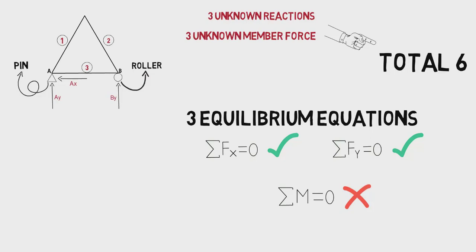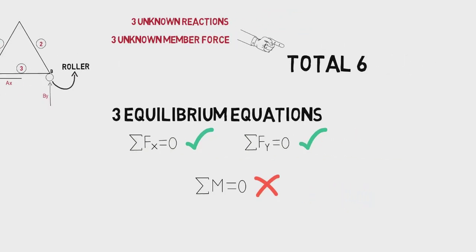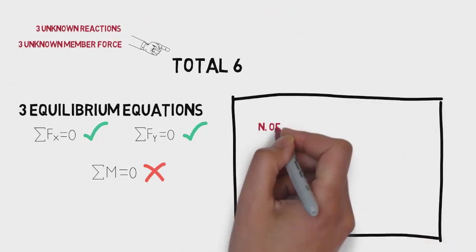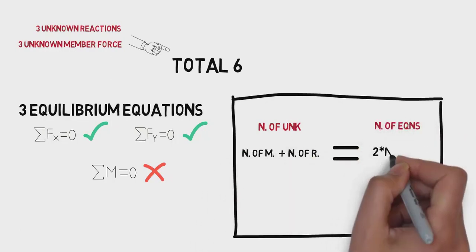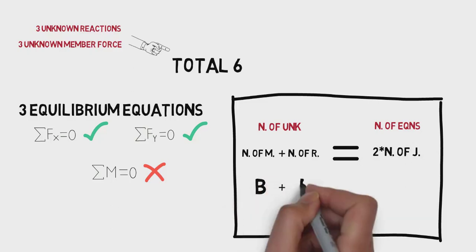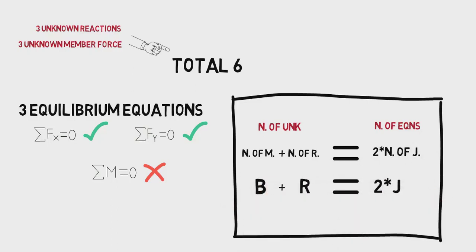And remember, for any truss member to be statically determinate, we need to have number of members plus number of reactions must be equal to two times number of joints.